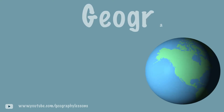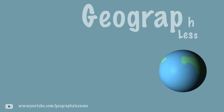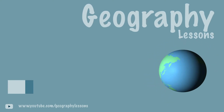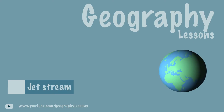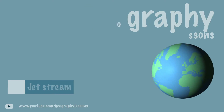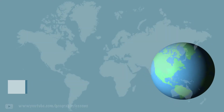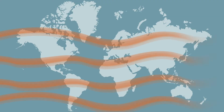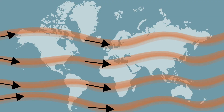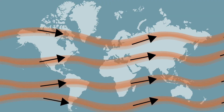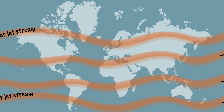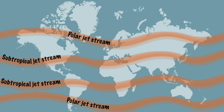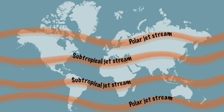The jet streams are air currents thousands of kilometers long, several hundred kilometers wide and several kilometers thick. These winds flow in a wavy west to east pattern at an altitude of about 10 to 15 kilometers. There are different types of this wind, such as the polar and the subtropical jet stream.